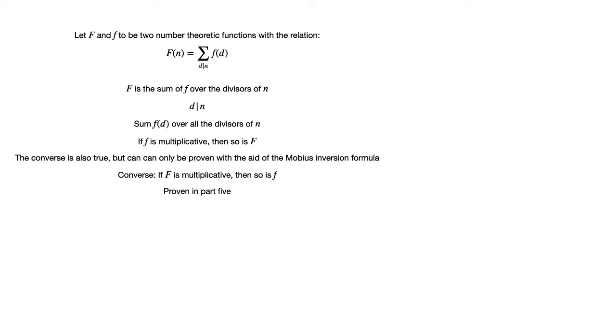To prove the original statement, that is the multiplicativity of little f forces capital F to be multiplicative, we need to pave the way with a smaller lemma. Here is its statement. If the GCD of m and n equals 1, then every divisor d of mn can be expressed in the form d equals d₁d₂, where d₁ divides m and d₂ divides n and the GCD of d₁ and d₂ equals 1.